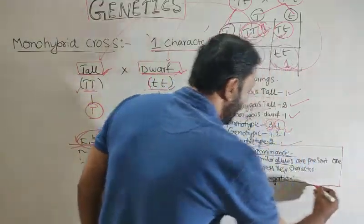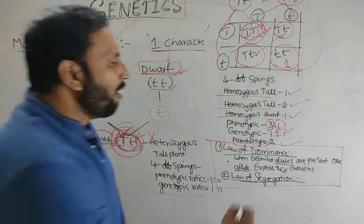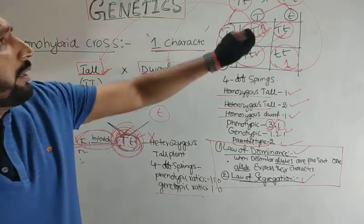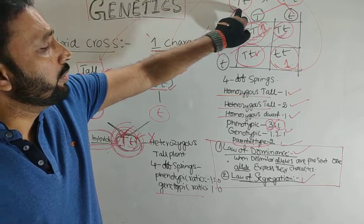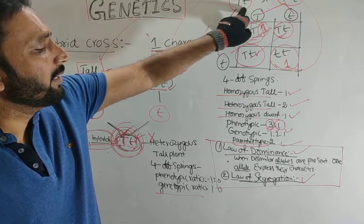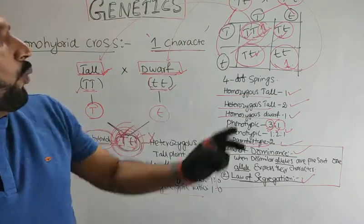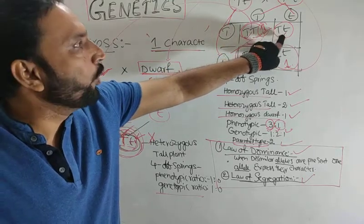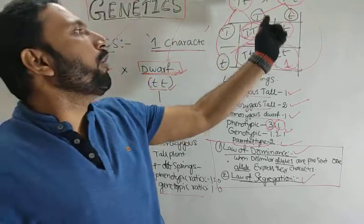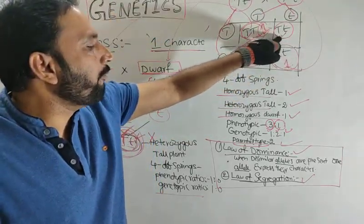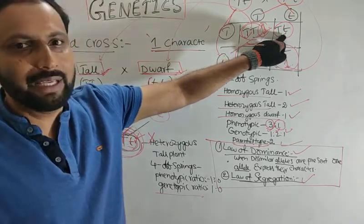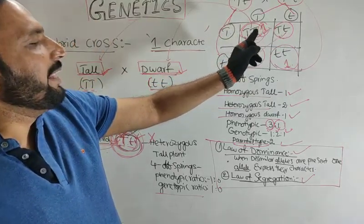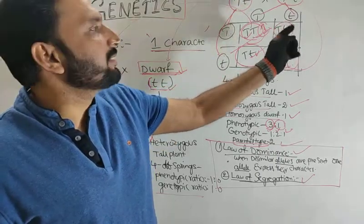Gregor John Mendel proposed two laws based on the monohybrid cross: law of dominance and law of segregation. Law of dominance: look here, this is heterozygous — dissimilar alleles capital T and small t are present. When dissimilar alleles are present, only one allele expresses its character. Capital T and small t are there, but only capital T expresses the character — it is the dominant character. So the law of dominance means when the plant is heterozygous and dissimilar alleles are present, only one allele expresses the character.